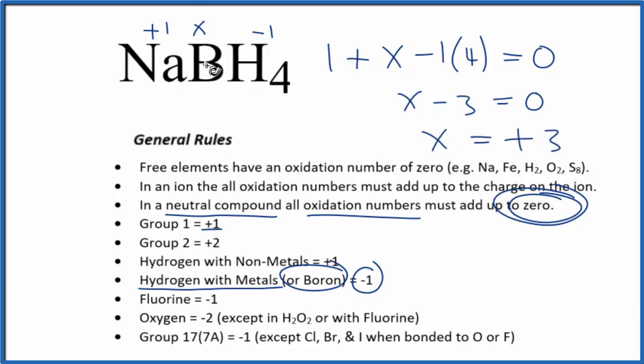So the oxidation number for boron in sodium borohydride is +3. If we multiply 4 times -1, plus 3, plus 1, that equals zero, because this is a neutral compound.